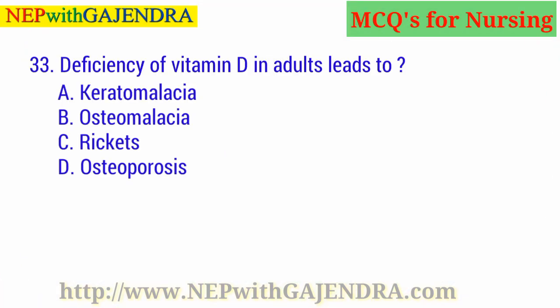Deficiency of vitamin D in adults leads to: A. Keratomalacia. B. Osteomalacia. C. Rickets. D. Osteoporosis. The right answer is B: Osteomalacia.